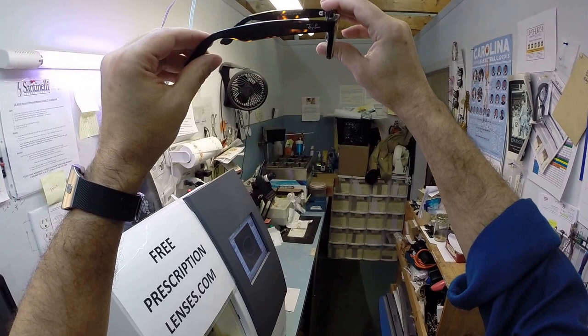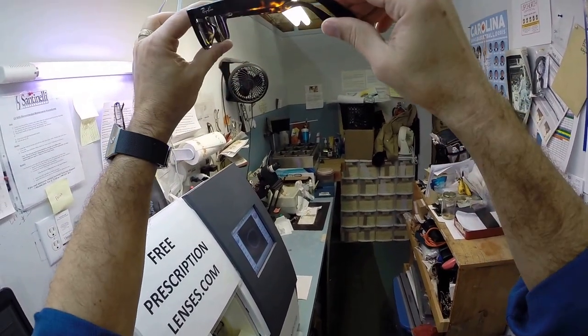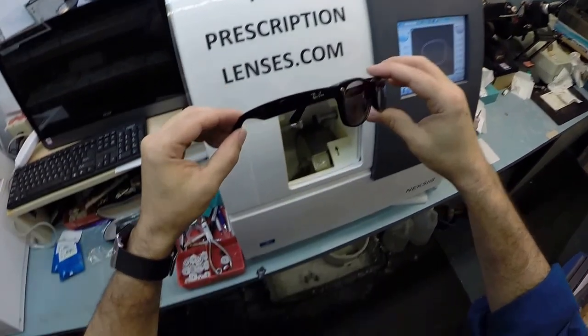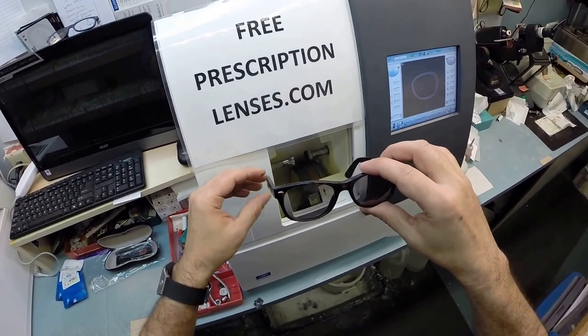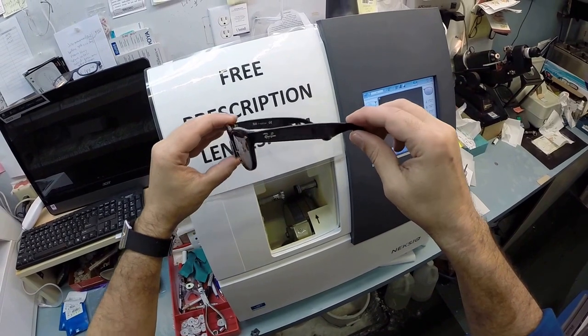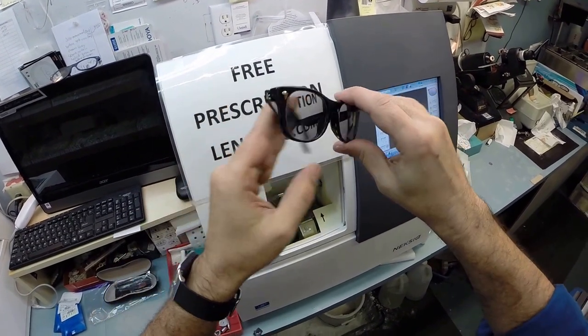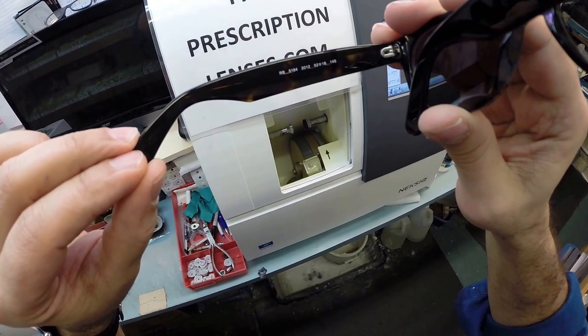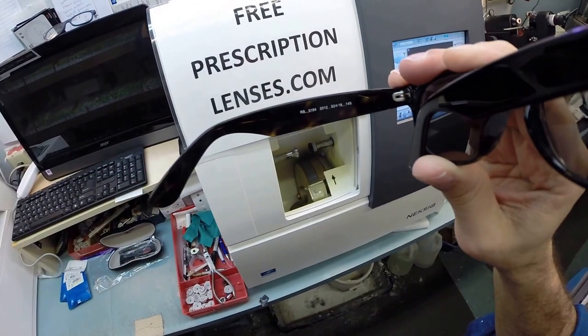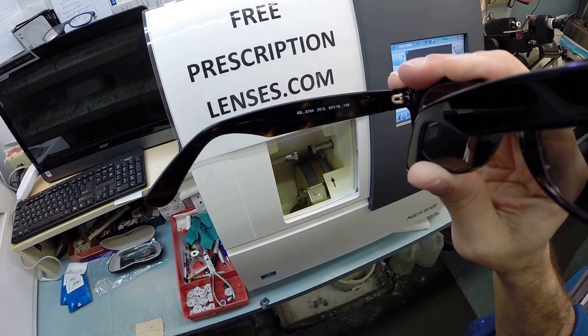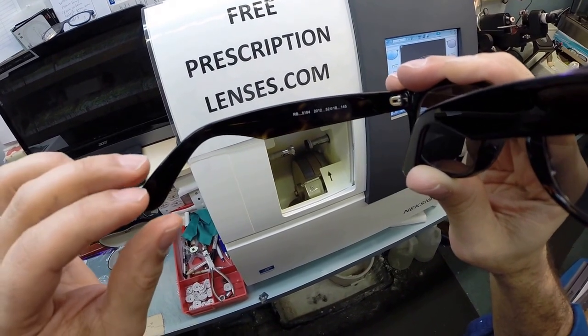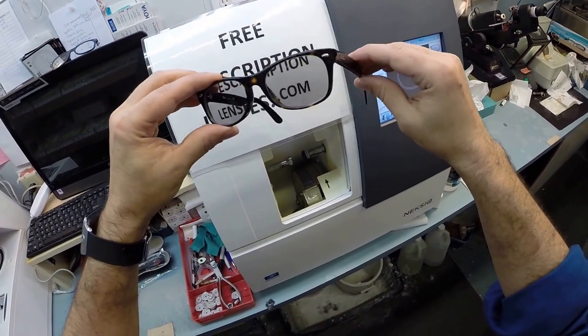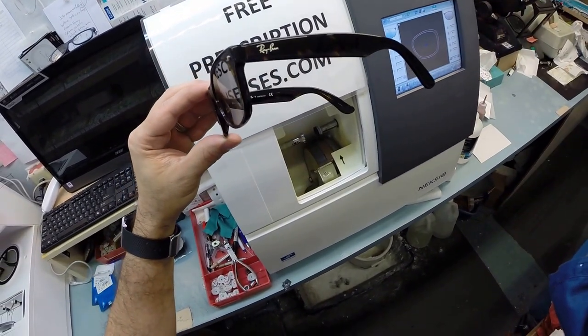This is a great color for this frame, the classic tortoise, the dark havana. If anyone has any questions about what I can or can't do, just email me at FreePrescriptionLenses@gmail.com. Randall in Orlando, Florida, I hope you enjoyed watching as I cut prescription lenses with Transitions 7 gray for your Ray-Ban 5184 color 2012 in the 52 eye size. Everyone else has got the chance to see how I bring that love and feeling back to glasses. Thank you.